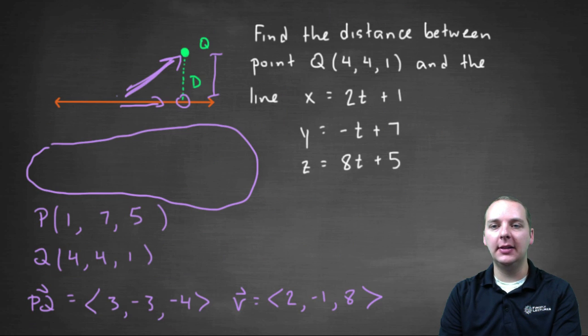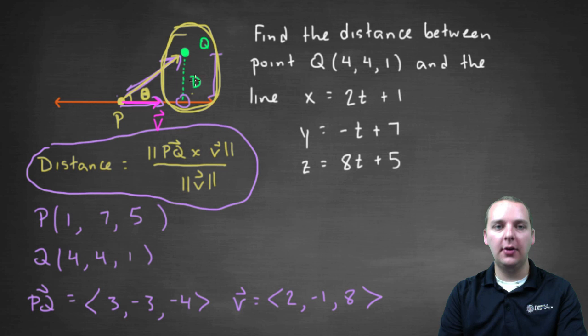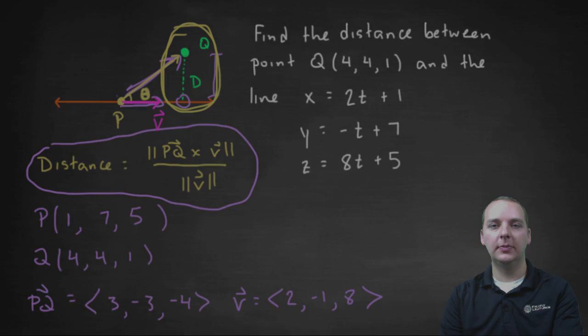Now what does that distance represent? That distance is the closest distance from the line to the point Q.